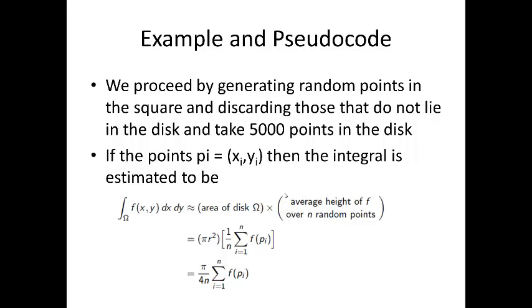We proceed by generating random points in the square and pitch out those that don't lie in the disk. We do this until we get about 5,000 points in the disk. If the points pᵢ = (xᵢ, yᵢ), then the integral can be estimated to be π/4n, which is the area we're integrating over, times the summation of those individual points—the average height of f over n random points.